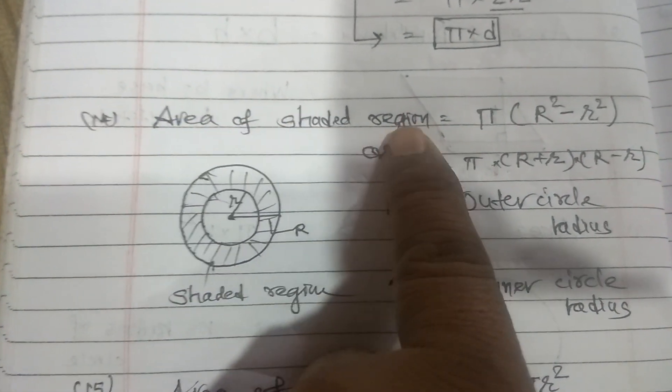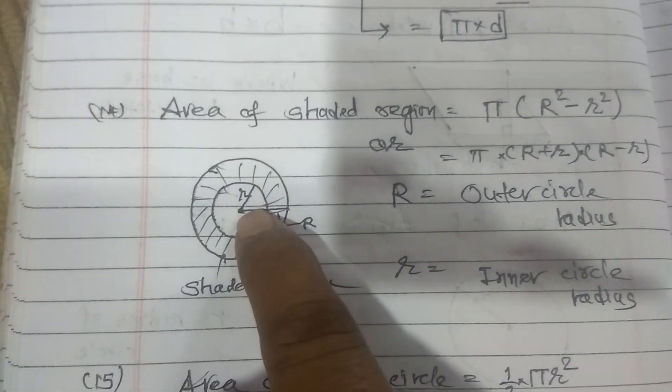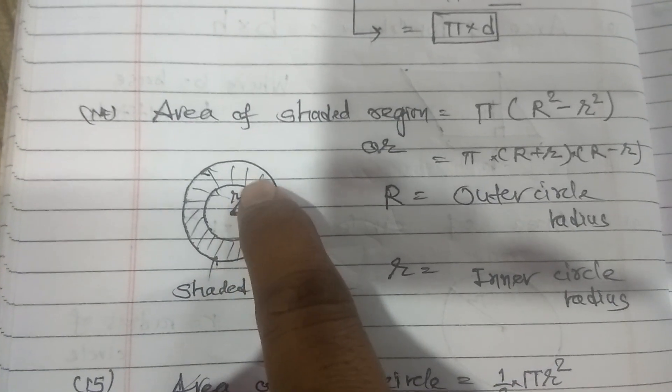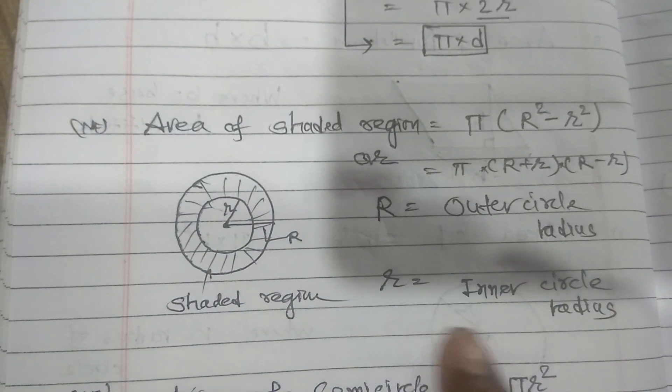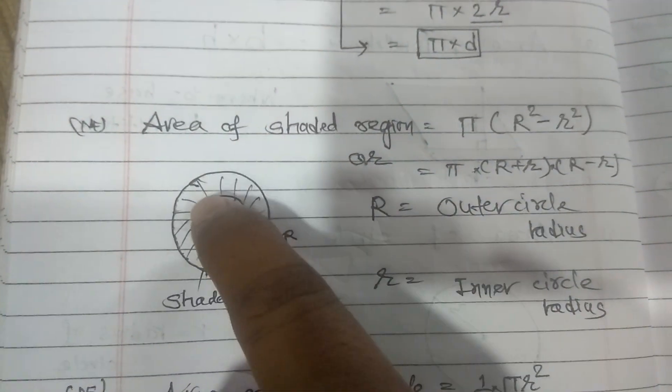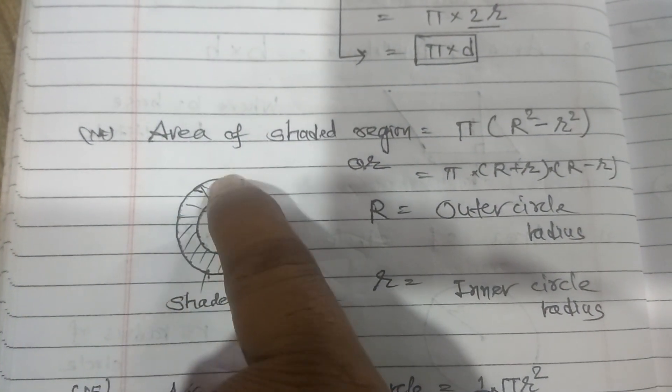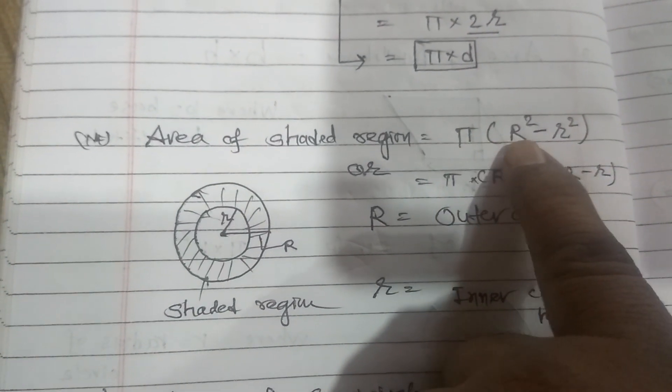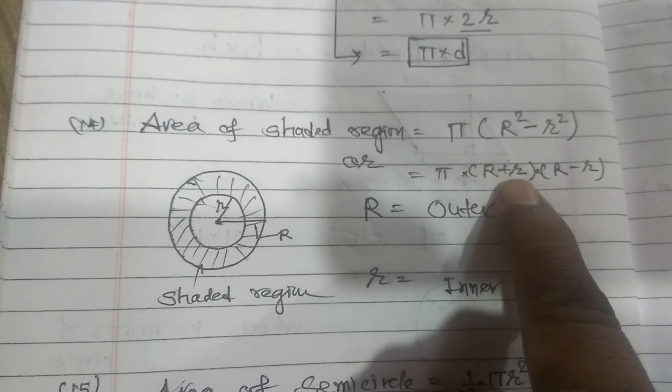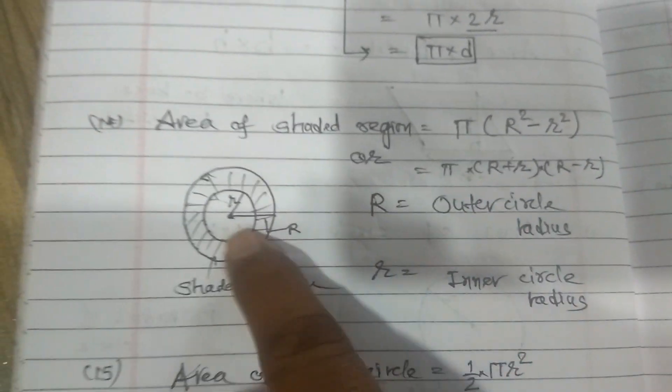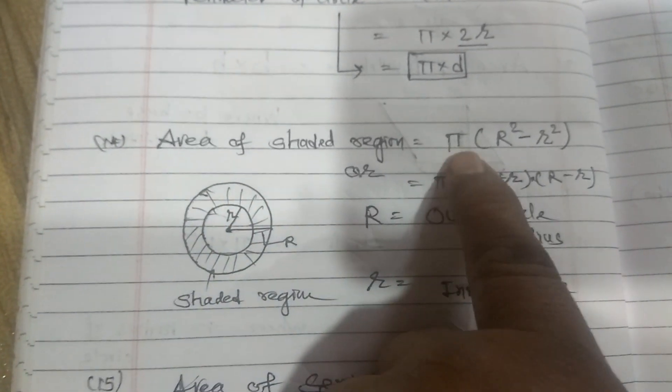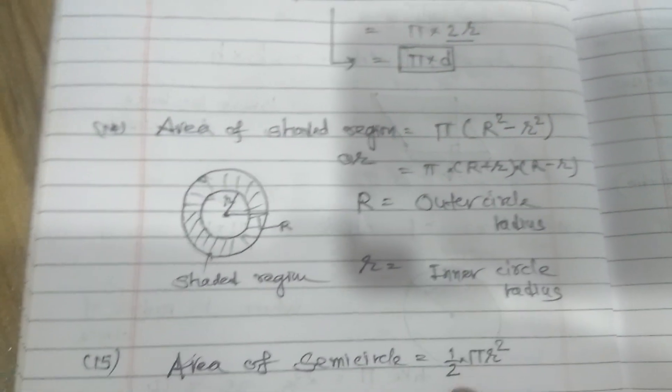Next, area of shaded region. Here when 2 circles will come, capital R is the radius of outer circle, small r is the radius of inner circle. So at that time, you have to apply this formula. Area of shaded region is equal to, when we want to find out this region, then we have to pi into bracket R square minus small r square, means pi into bracket R plus r, R minus r. What do we do here? Bigger circle minus smaller circle. That is pi R square minus pi r square.